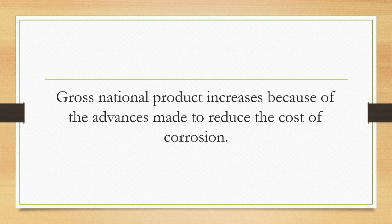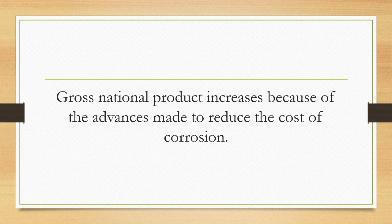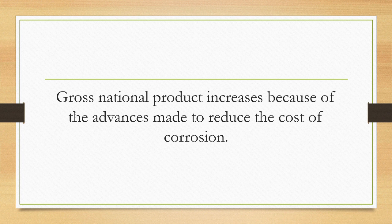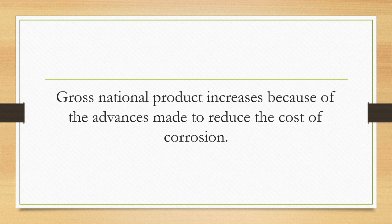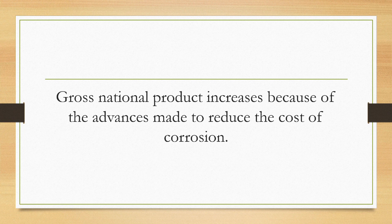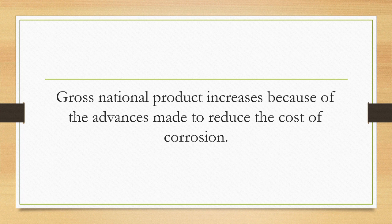Gross national product increases because of the advances made to reduce the cost of corrosion. Over the last two decades, economic growth and price inflation have increased the gross national product more than four-fold. If nothing else had changed, the cost of metallic corrosion would have risen to almost $350 billion annually. Advances have been made in the use of stainless steels, coated metals, and more protective finishes. Moreover, several substitutions of materials made primarily for reasons of weight reduction have also reduced corrosion. The updated study shows that the total cost of metallic corrosion was reduced by some 14% of the gross national product.